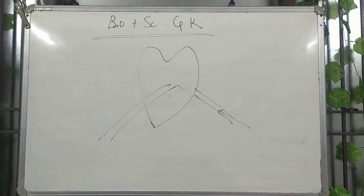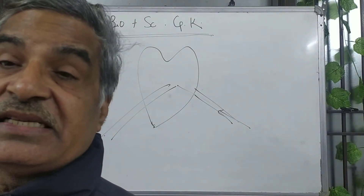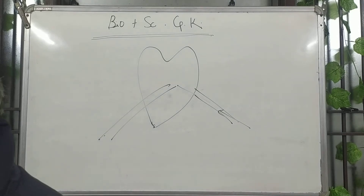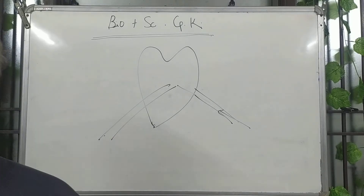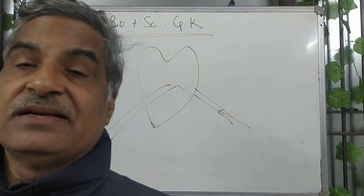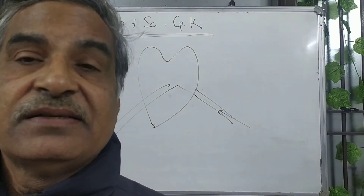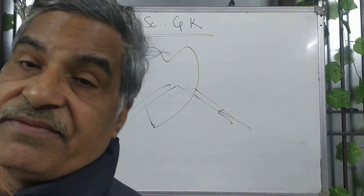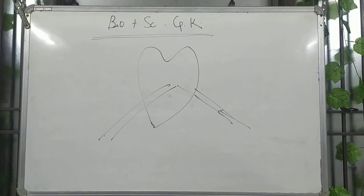Next question: what is the smallest unit of life? The options are cellulose, DNA, cell, and atom. An atom is the smallest in physical quantity, but in life, the answer is cell. Cell is the smallest unit of life — a cell has life, an atom does not.